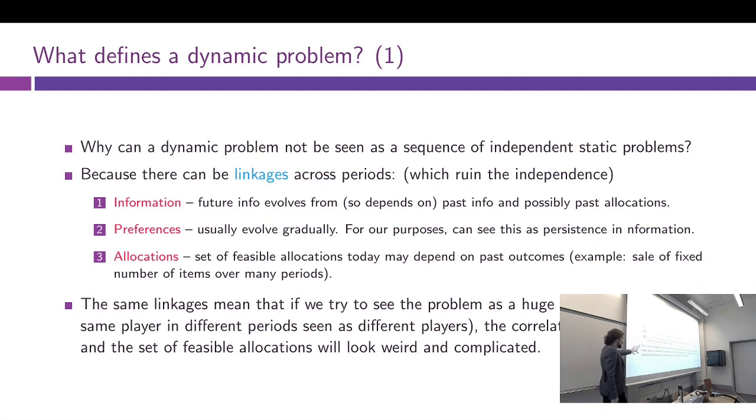The same linkages apply if we try a different cheat—instead of splitting our long mechanism design problem into many small problems, we try to frame it as one single static problem where the same player in different periods is just interpreted as different players. We could look at it that way. We could interpret it as a dynamic mechanism. The problem there is the correlations in different players' information—for example, correlation between player of me today and me tomorrow. There will be some correlation between their information. We'd have correlation between players' information, we would have various strange sets of feasible allocations if linkages in allocations are in place. So it's just easier to look at these dynamics explicitly rather than try to bend it into a static framework.